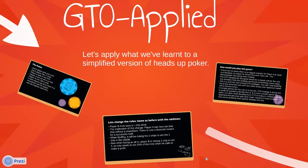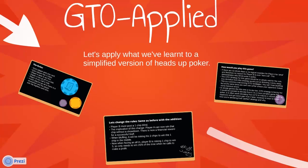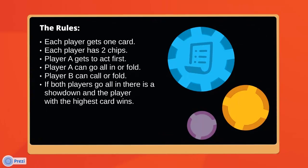Applying it to a simplified version of heads-up poker: each player only gets one card and they only have two chips. Player A acts first and can choose to go all-in or fold. Player B can either call or fold. If player A goes all-in, player B can then call or fold. If both players go in, there's a showdown and the highest card wins.